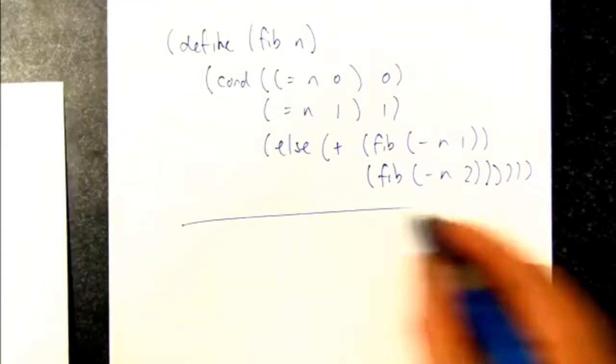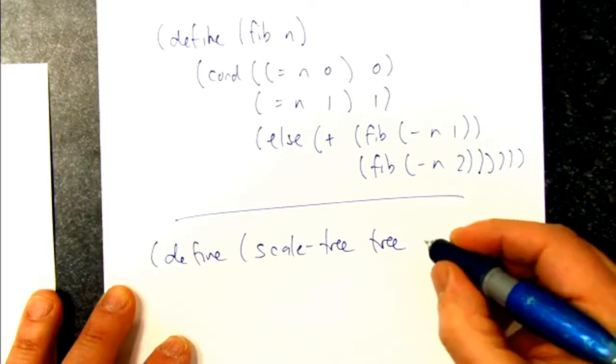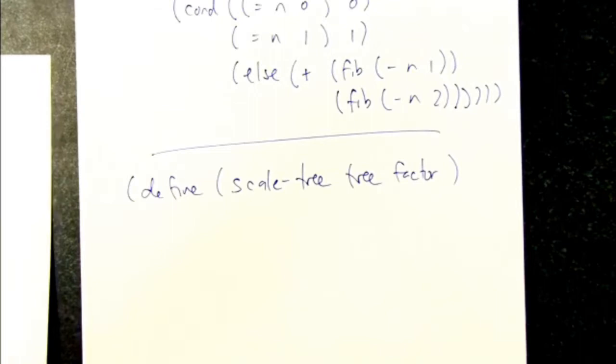We did sum tree, now let's do scale tree and factor. So this one is going to spit out a new tree with each element scaled by whatever factor is.